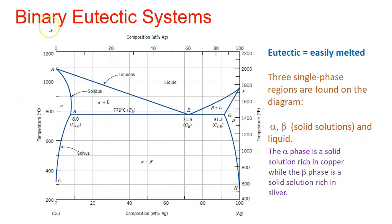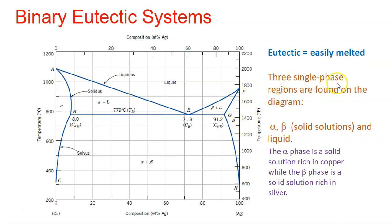This is another important and common type of phase diagram, usually found for binary alloys. It is known as a binary eutectic system. Eutectic means easily melted. In this eutectic system, there are three single phases found in the diagram: the first one is alpha, the second is beta, and the third is liquid.